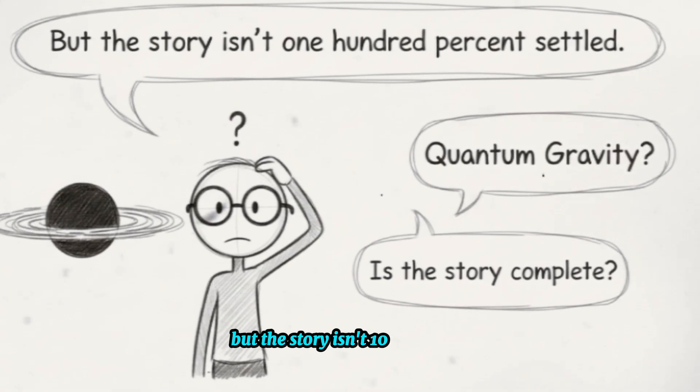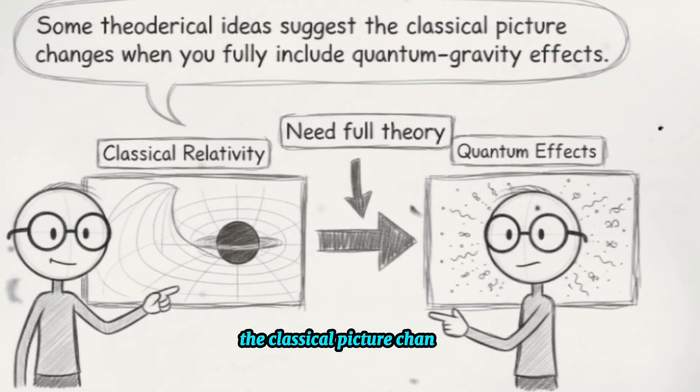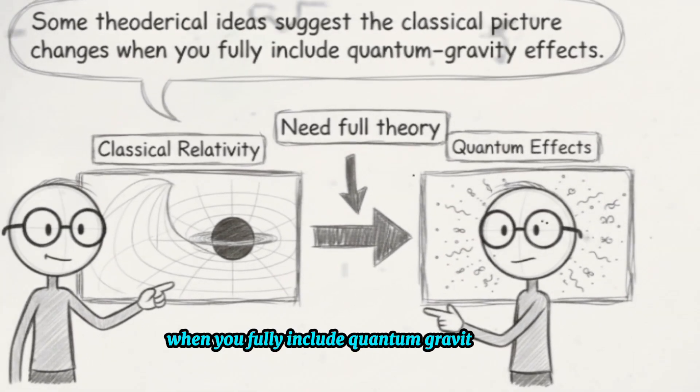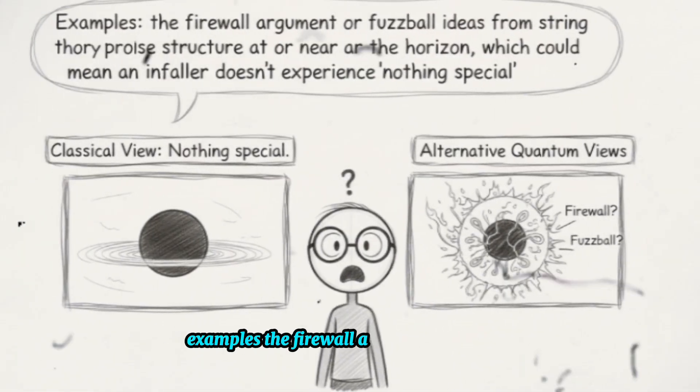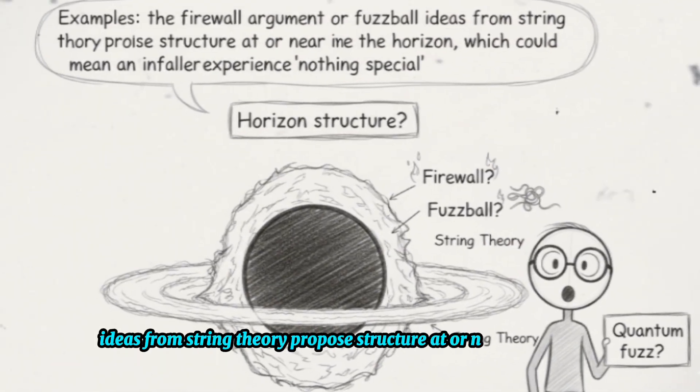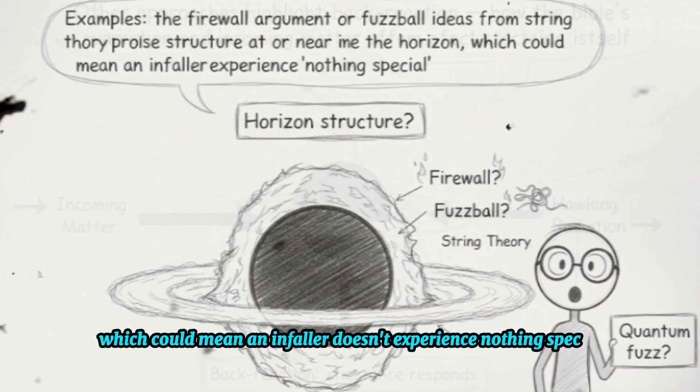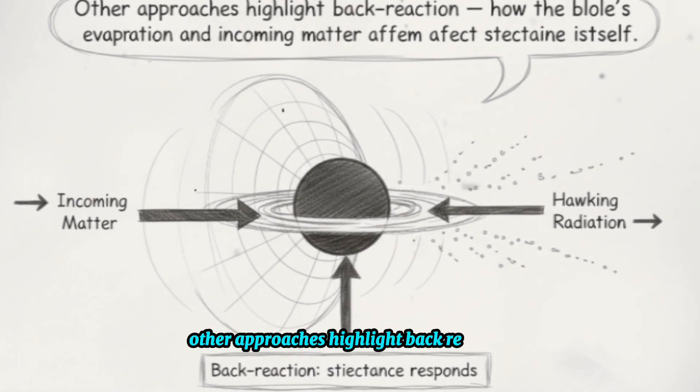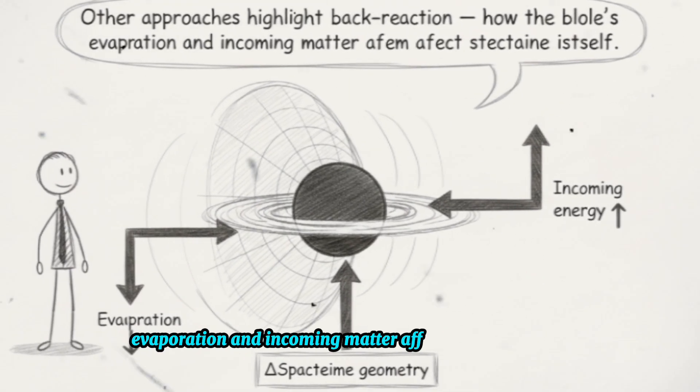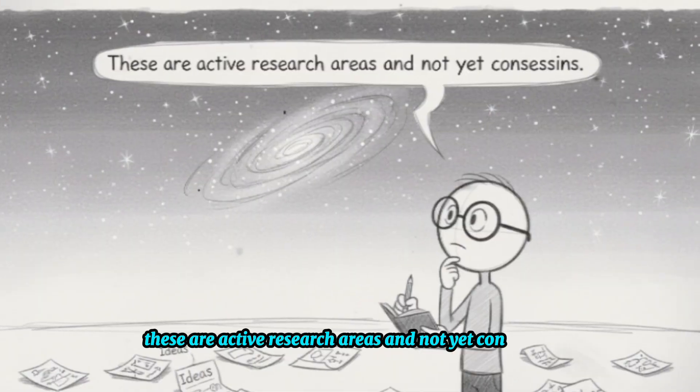But the story isn't 100% settled. Some theoretical ideas suggest the classical picture changes when you fully include quantum gravity effects. Examples: the firewall argument or fuzzball ideas from string theory propose structure at or near the horizon, which could mean an infaller doesn't experience nothing special. Other approaches highlight back reaction, how the black hole's evaporation and incoming matter affect space-time itself. These are active research areas and not yet consensus.